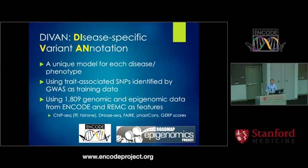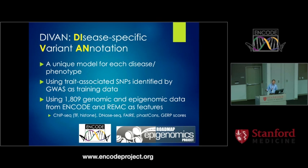Today I want to introduce a method we recently developed called DIVINE — disease-specific variant annotation. As the name suggests, our method builds a unique model for each different disease and phenotype, making it disease-specific, unlike all the methods I mentioned previously.